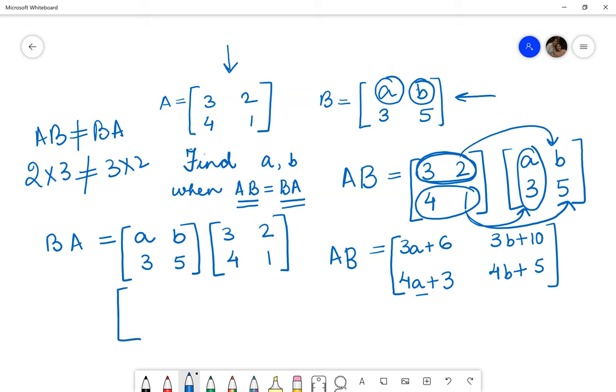So this will be written as row 1 multiplied by column 1, which will be 3A plus 4B. Row 1 multiplied by column 2, it will be 2A plus B. Row 2 multiplied by column 1, which will be 9 plus 20, and row 2 multiplied by column 2, which will be equal to 6 plus 5 into 1, which is 5.